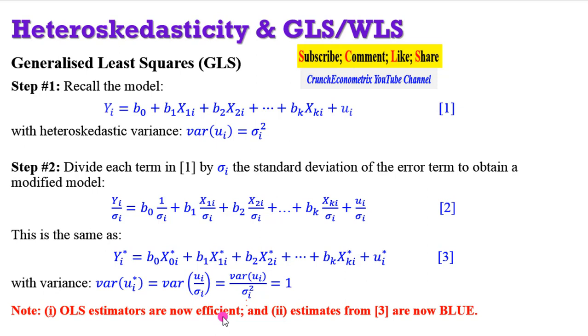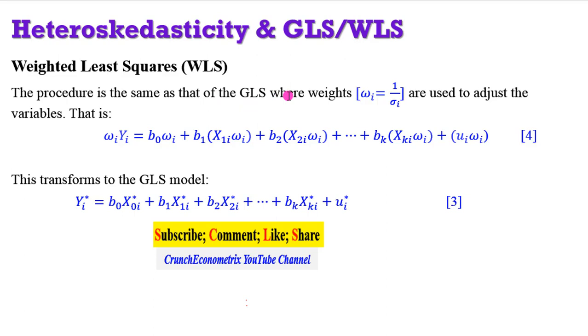So by the time you deploy the GLS approach, OLS estimators are now efficient and the estimates from equation 3 are now BLUE. For the weighted least squares, it is the same procedure as the GLS, where in this case, weights are used to adjust the variable. The weight in this case is 1 over sigma i, which is the same thing that was done on that GLS. So by the time equation 1 is multiplied by the weights, we have equation 4 as shown on the screen, which is the same thing as equation 3 for the GLS model.